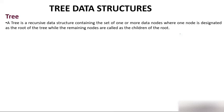The definition says a tree is a recursive data structure. A recursive data structure means something which is defined in a recursive fashion, calling itself again and again. It contains a set of one or more data nodes, where one node is designated as the root of the tree.